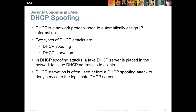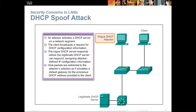DHCP snooping — spoofing and starvation. DHCP is used for automatically assigning IP addresses. There are two types of attacks: spoofing, where fake DHCP servers are placed in the network to issue incorrect addresses; and starvation, which is often used before a spoofing attack to deny service to the legitimate DHCP server. In a spoofing attack, a rogue DHCP server responds to client broadcasts — it may or may not beat the legitimate server depending on proximity and response time.